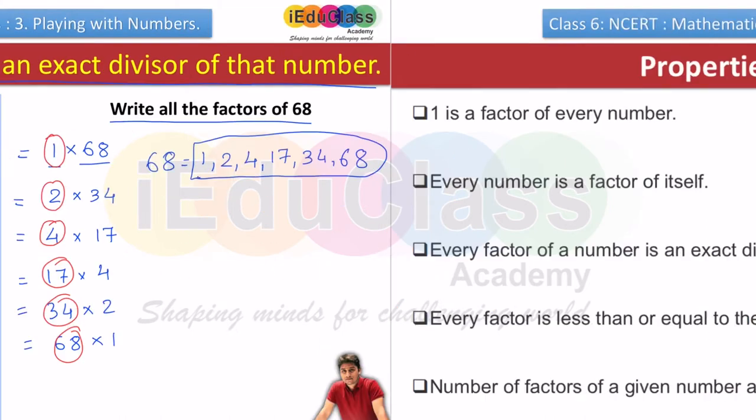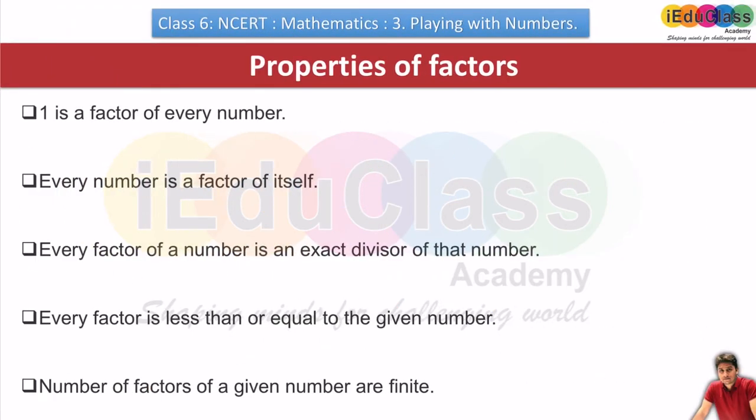Let's go ahead. There are a few properties of factors. The first property is: 1 is a factor of every number, because one can divide every number. Second is: every number is a factor of itself. This is the second compulsory factor. The number itself is a factor of every number; one is a compulsory factor of every number, so two are fixed.